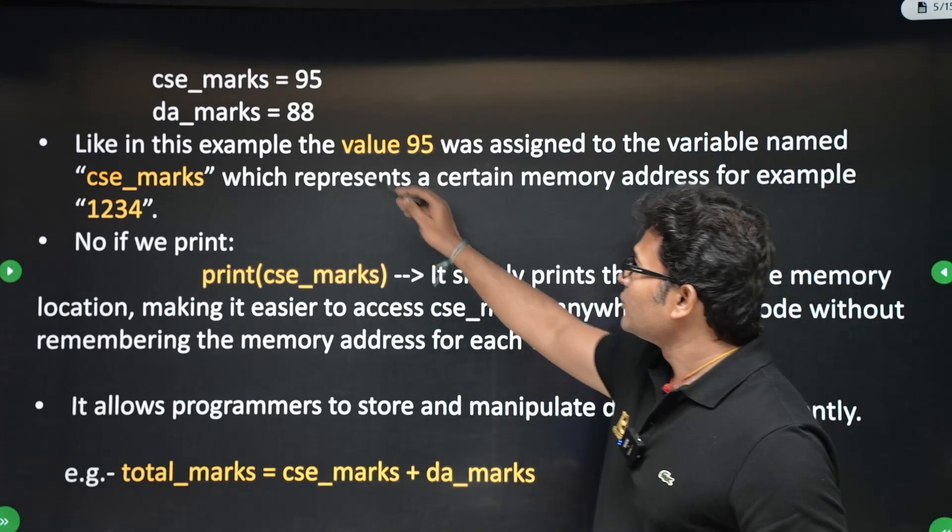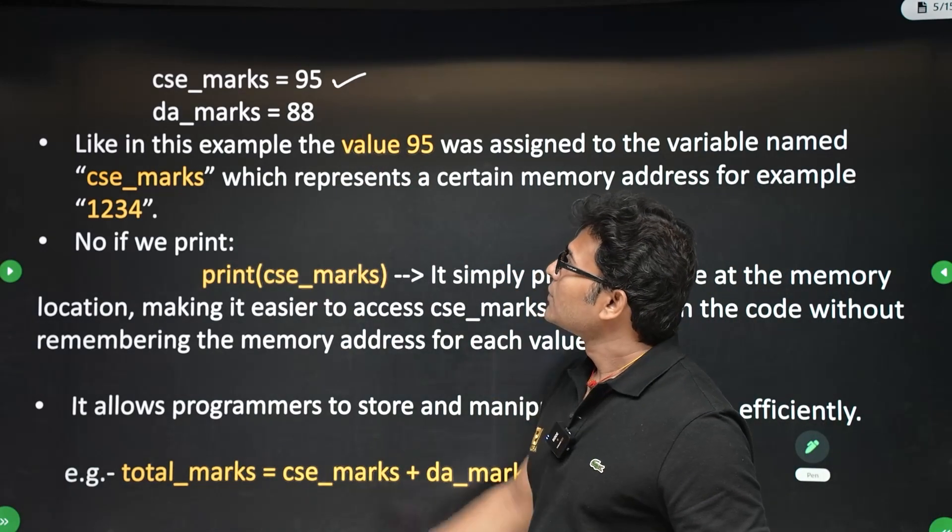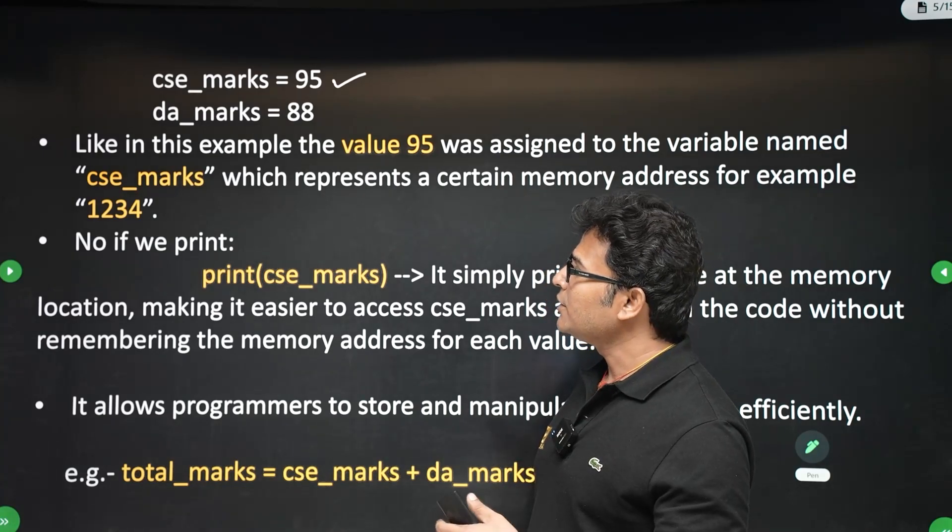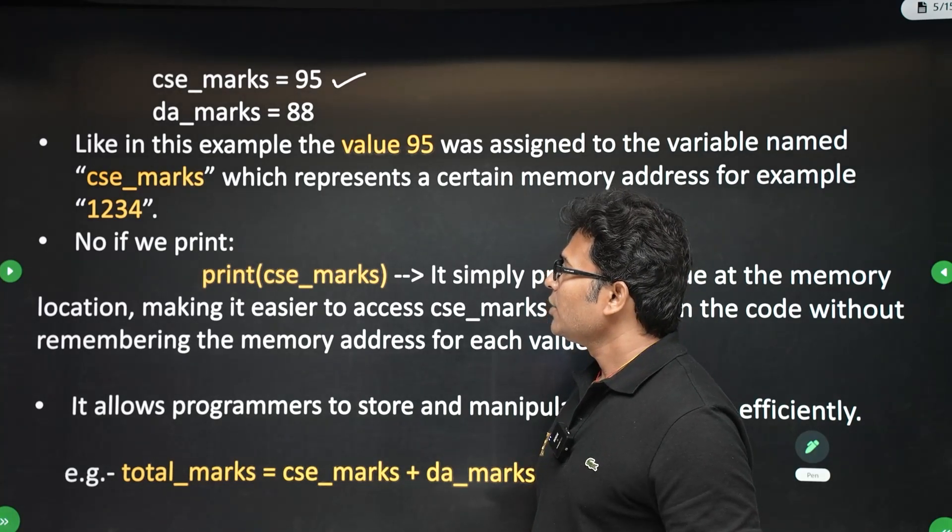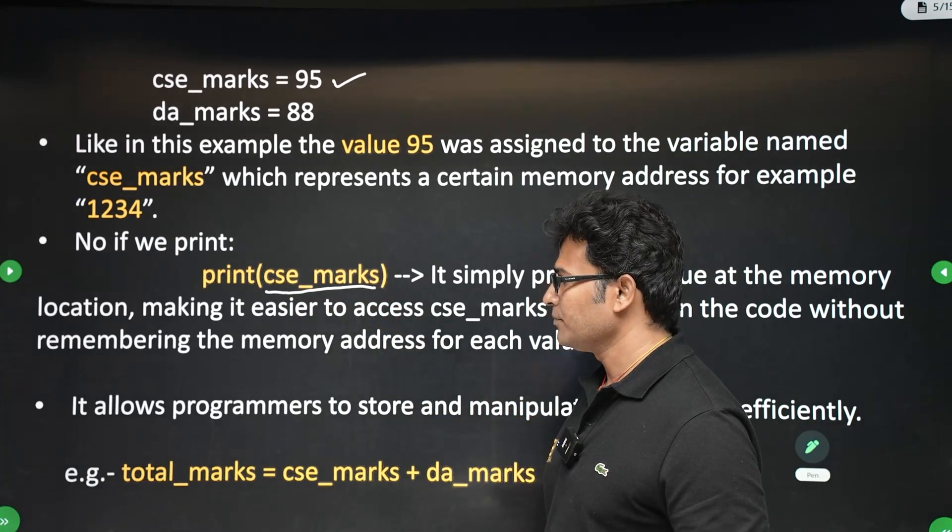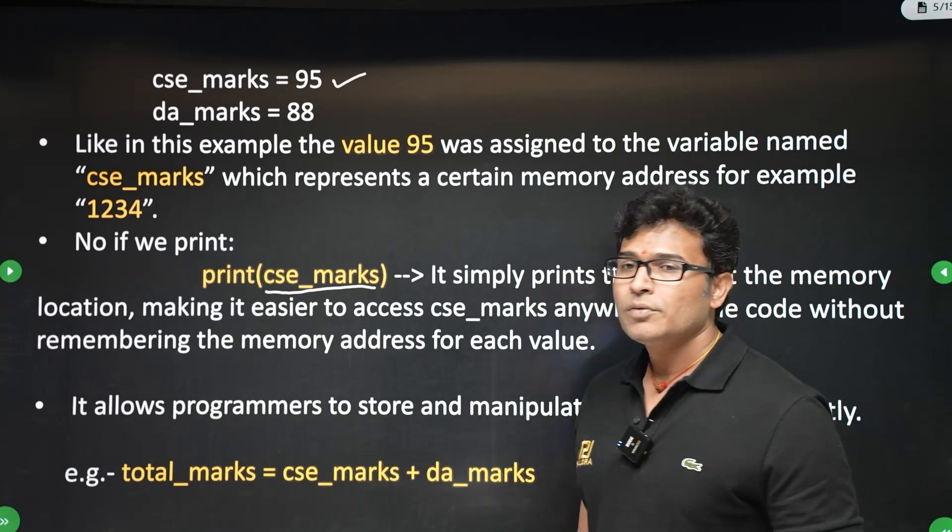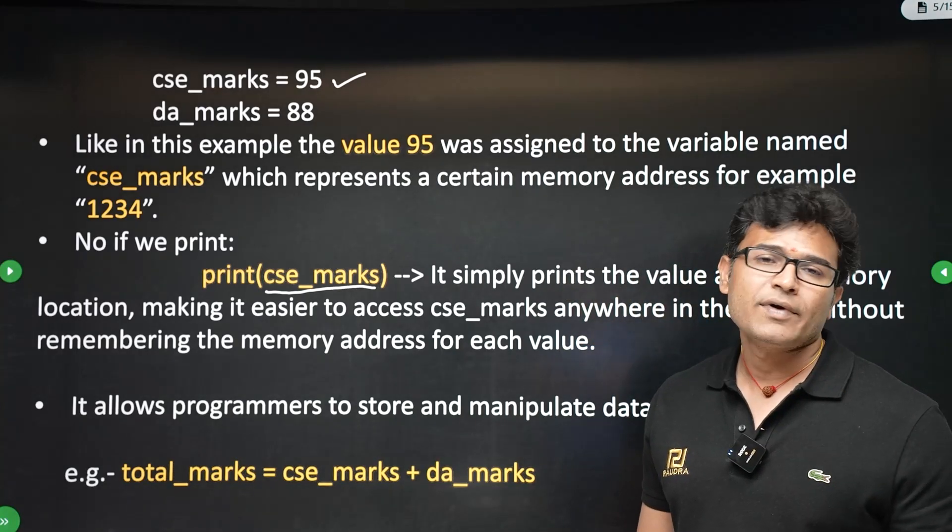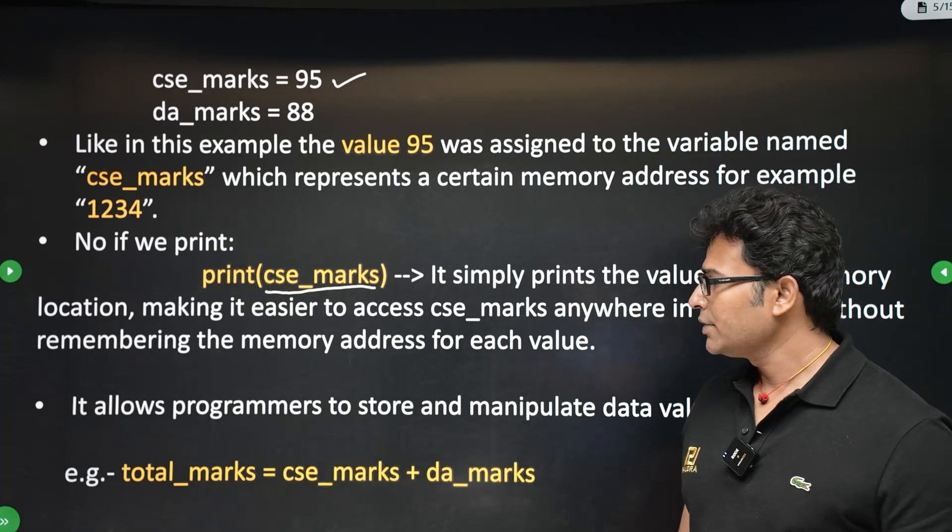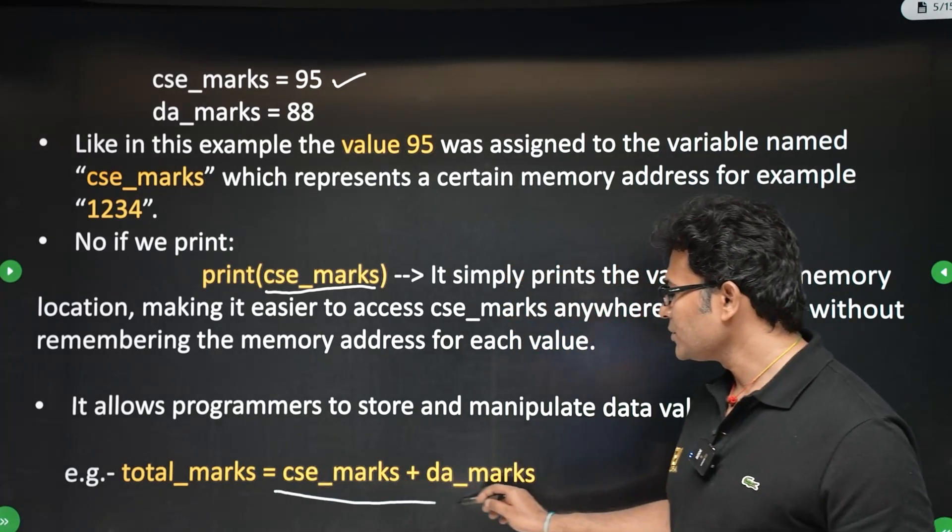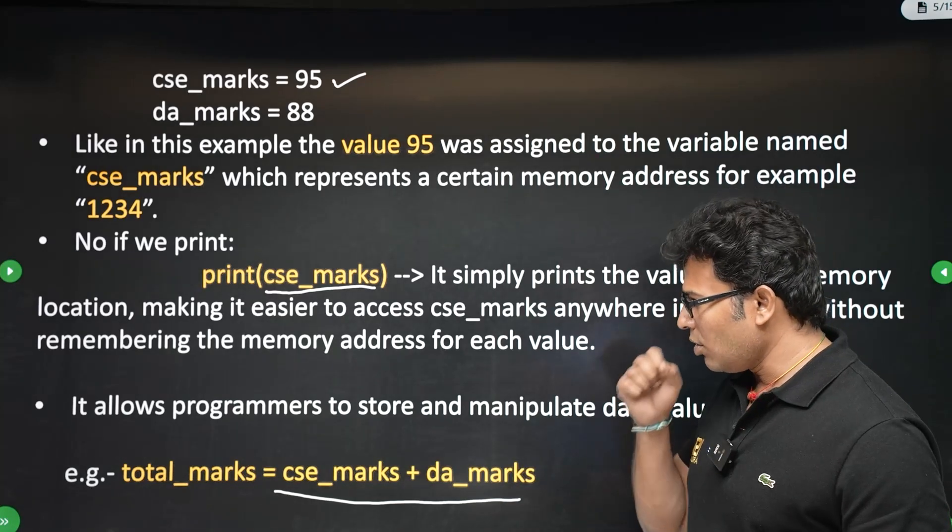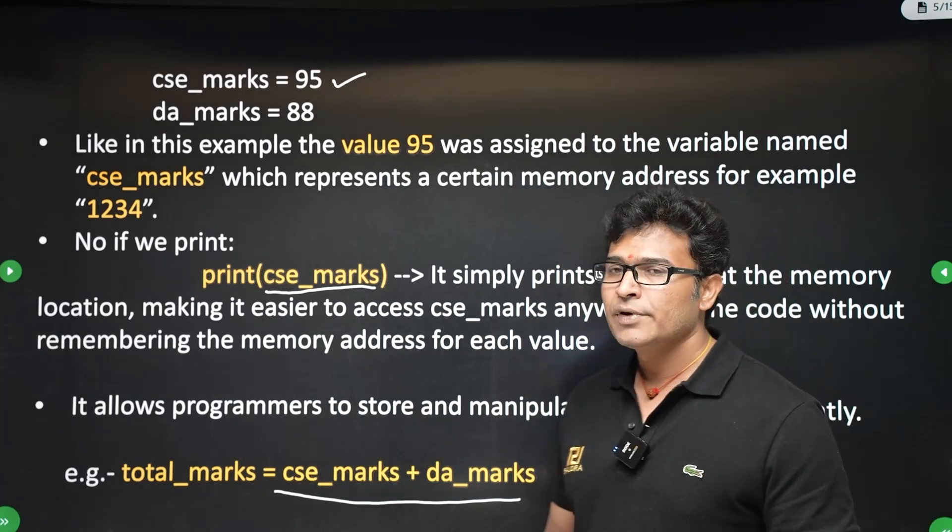In this example, we are assigning 95 to CSE marks and we are assigning 88 to DA marks. You can print the value by using the variable name. In fact, you could manipulate or use the value of the variables anywhere you want in the program. For example, you can write like this: total marks equal to CSE marks plus DA marks. So variables are very, very handy.